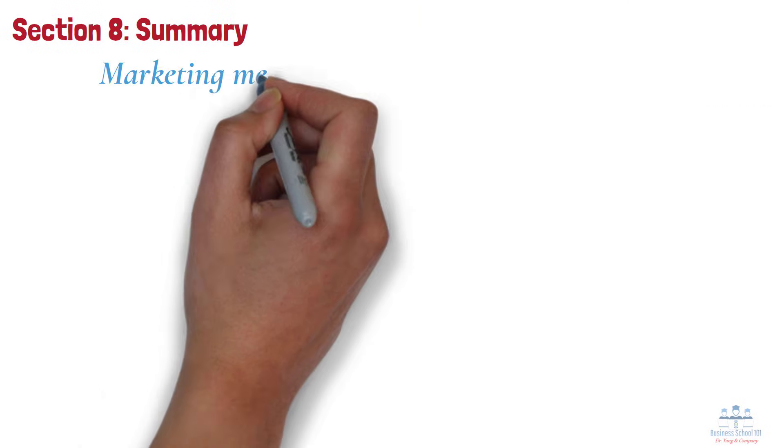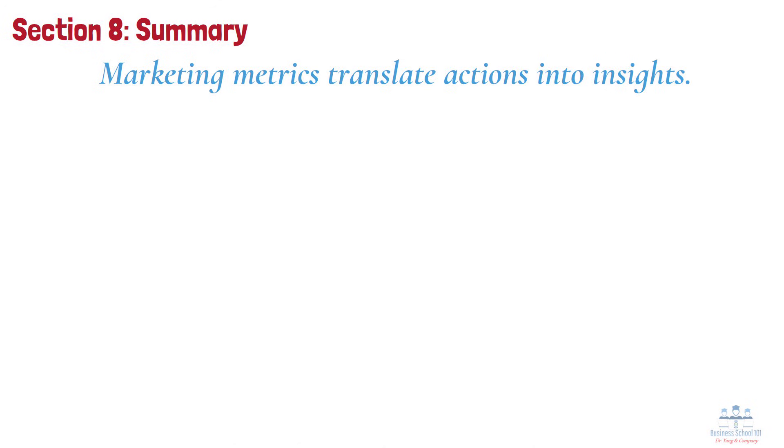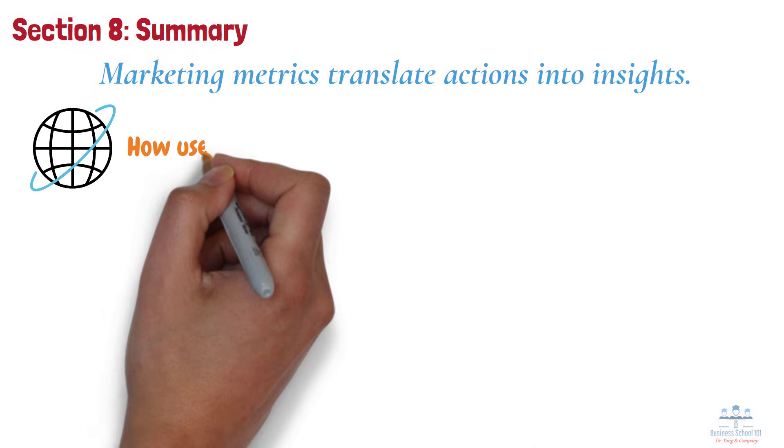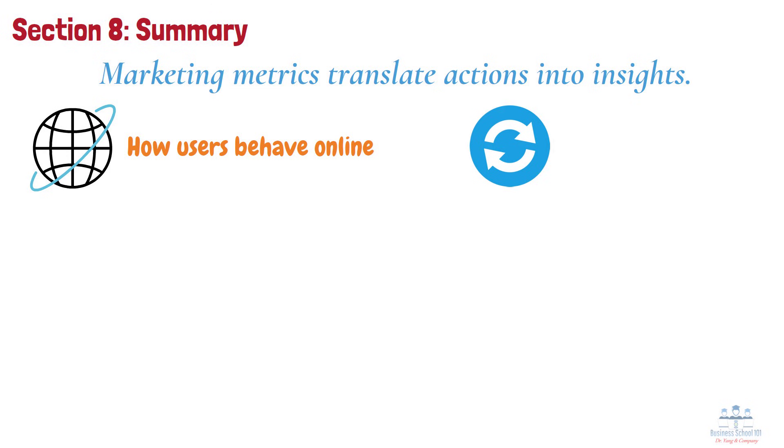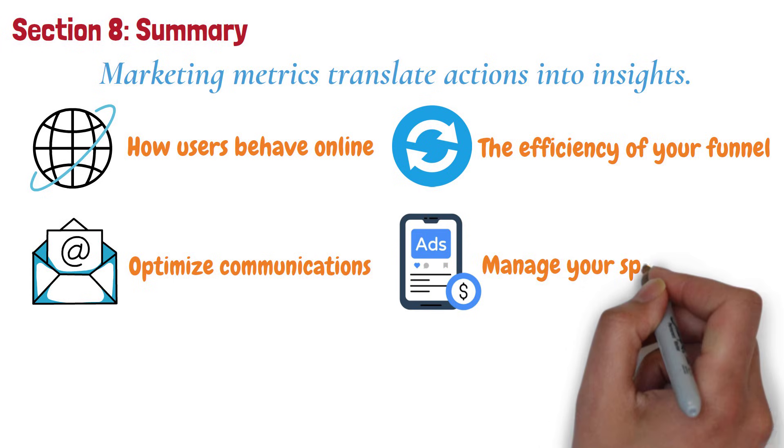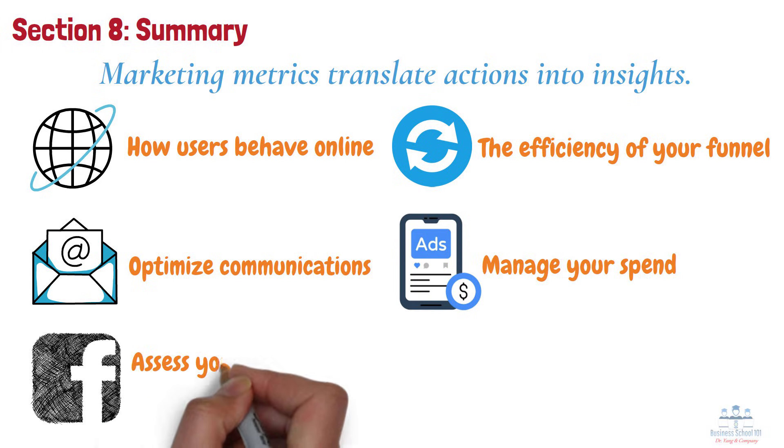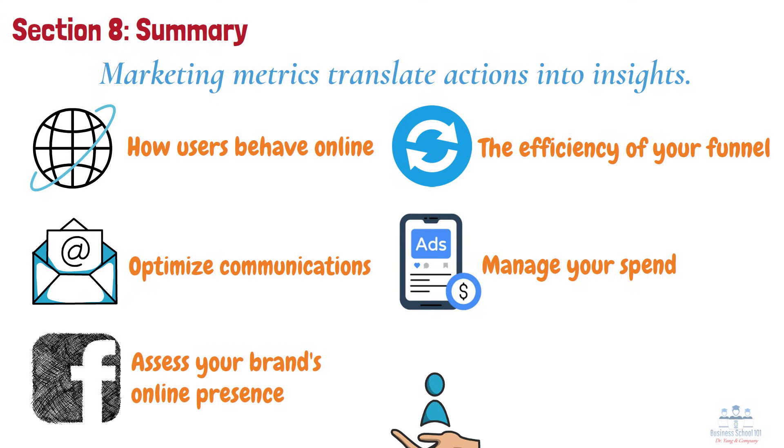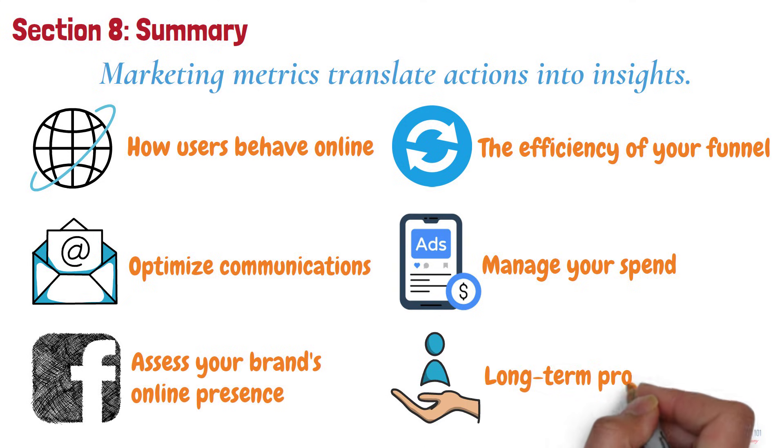Section 8. Summary. To wrap up, marketing metrics translate actions into insights. Website metrics show how users behave online. Conversion metrics reveal the efficiency of your funnel. Email and CRM metrics help optimize communications. Paid ad metrics manage your spend. Social metrics assess your brand's online presence, and customer-centric KPIs ensure long-term profitability.